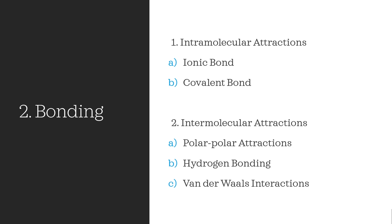The second aspect is bonding. We have two main groups: intramolecular attractions, which are inside the molecule between atoms, and intermolecular attractions, which are between two or more molecules. The first group consists of ionic bonds and covalent bonds. While the second group includes polar-polar attractions, hydrogen bonding and van der Waals interactions.